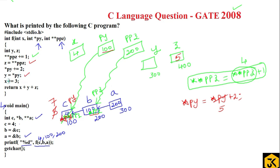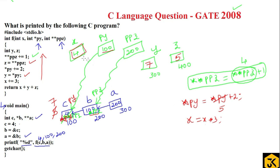Next, `y = *py`: *py is now 7, so y gets the value 7. Then `x += 3` means x = x + 3. Checking the local variable x, its value is 4, so 4 + 3 = 7. That is updated in the local variable x. So now x = 7.